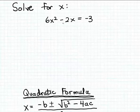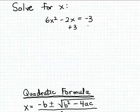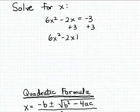To apply the quadratic formula to solving this equation, first we need to set the equation to zero. I'm going to do that by adding 3 to both sides of the equation, and that will make the right-hand side zero. So we get 6x squared minus 2x plus 3 equals zero.